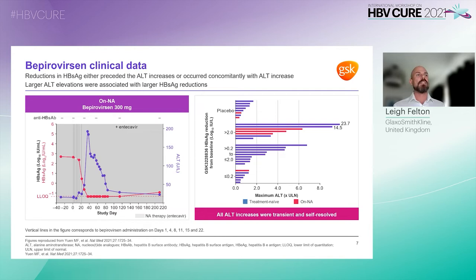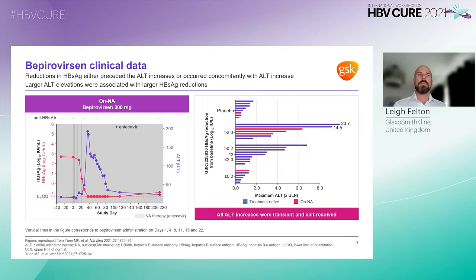ALT is shown in purple and S antigen as log10 in special units is shown in red. Vertical lines are the dosing schedule for bepirovirsen. As you can see, suppression of S antigen preceded ALT elevations, which then went on to self-resolve in the off-treatment phase. For this particular participant, HBsAg remained below the level of quantification in the majority of the off-treatment follow-up period, but did become detectable after 26 weeks.